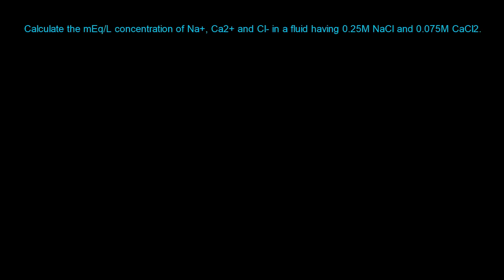It's important to understand that all of these ions are coming from the salt. The sodium cation comes from sodium chloride, the calcium cation comes from calcium chloride, and chloride ions come from both salts. The strategy is to find the milliequivalents per liter of chloride from each salt and add those two values together.